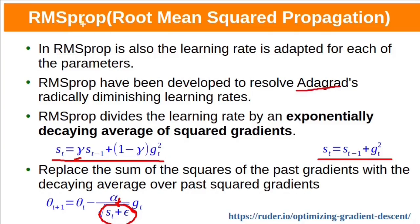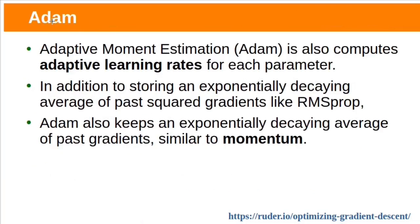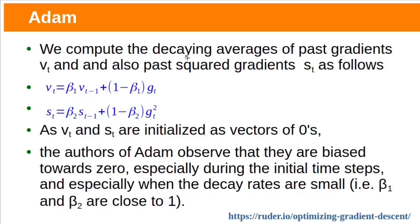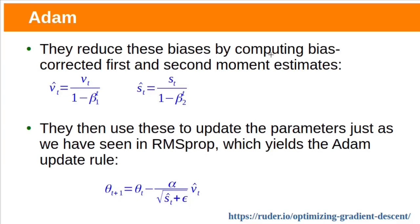Let's see Adam — Adaptive Moment Estimation. Adam also computes adaptive learning rates for each parameter. Adam is an update to RMSprop. In addition to storing an exponentially decaying average of past squared gradients S_t like RMSprop, Adam also keeps an exponentially decaying average of past gradients V_t, similar to momentum. We compute the decaying average of past gradients V_t and past squared gradients S_t using these two formulas. Since V_t and S_t are initialized as vectors of zeros, the authors of Adam observed that they are biased towards zero, especially during initial time steps and especially when the decay rates are small. They reduce this bias by computing bias-corrected first and second moment estimates, then use these to update the parameters, similar to what we have seen in RMSprop.